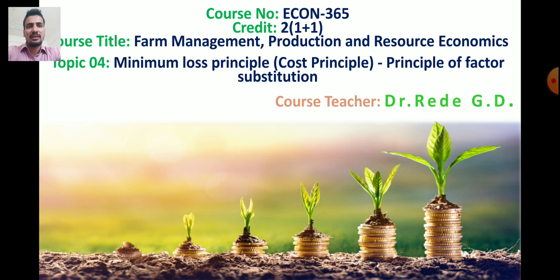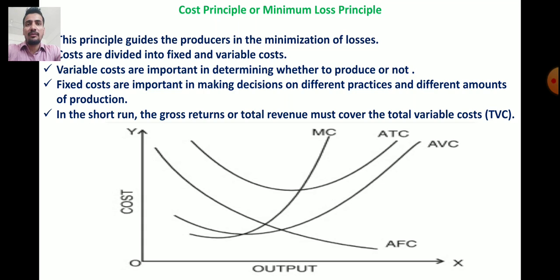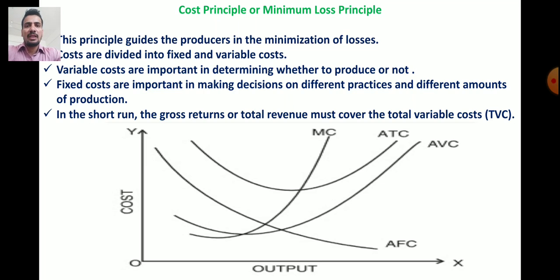The first topic is the cost principle, or minimum loss principle. This principle guides the producer in the minimization of losses — it guides farmers to minimize losses in farming activities. In this principle, costs are divided into two parts: fixed costs and variable costs. In farming, some costs are fixed over time and some costs are variable.